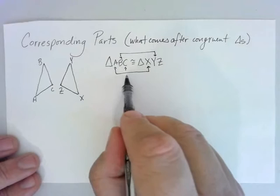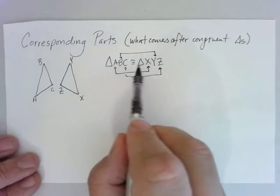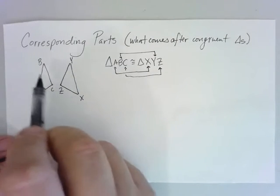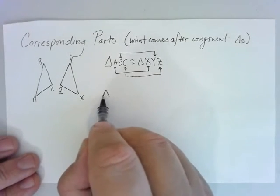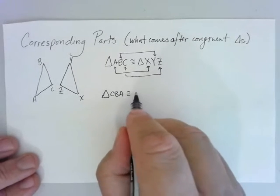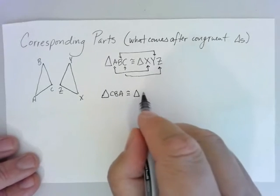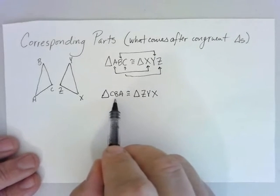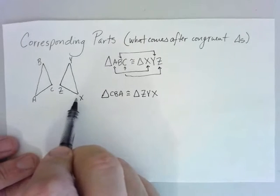The vertex at C corresponds with the vertex at Z. Intuitively, this means that if I were to pick this triangle up and lay it so it matches with the other, I'd have to put A on top of X, B on top of Y, C on top of Z. If I rename one triangle as CBA instead of ABC, then I have to switch the other one around too — writing ZYX in reverse order.